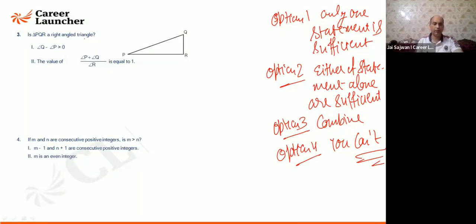So here I can say from statement 1, angle q is more than angle p. Of course, I cannot find out whether the triangle is a right angle triangle or not. Fine, so nothing can be concluded from this one.